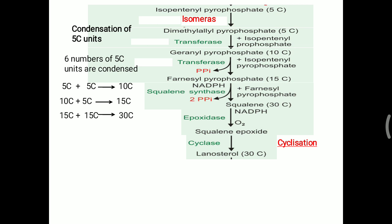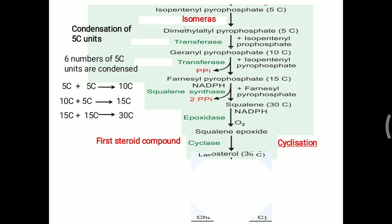Squalene epoxide is then cyclized by a cyclase enzyme to generate lanosterol. Lanosterol is the first sterol compound produced in a cyclic form — it is considered the first steroid compound in this pathway.